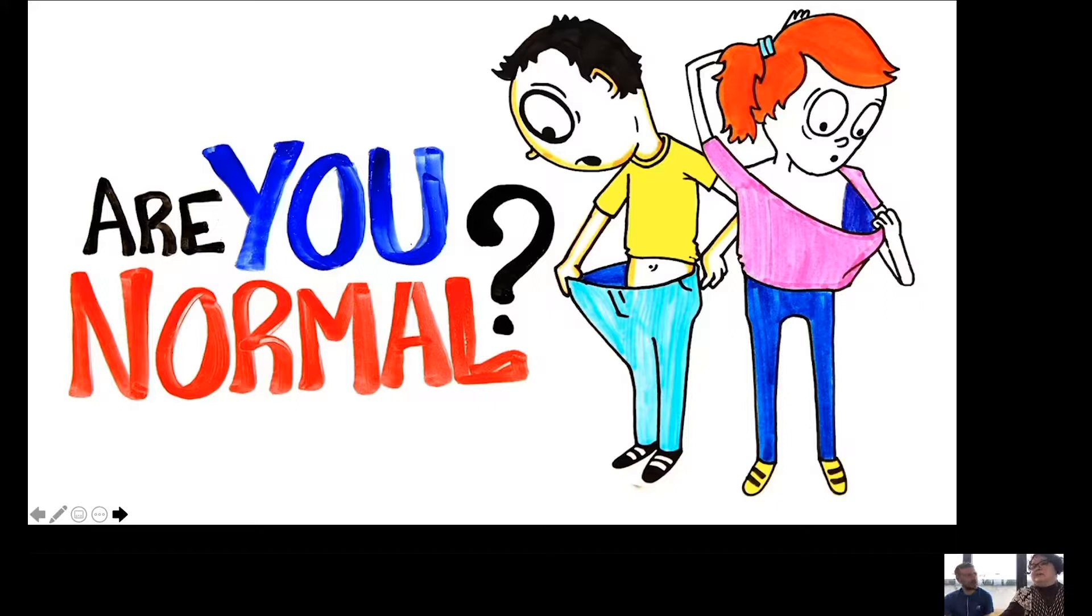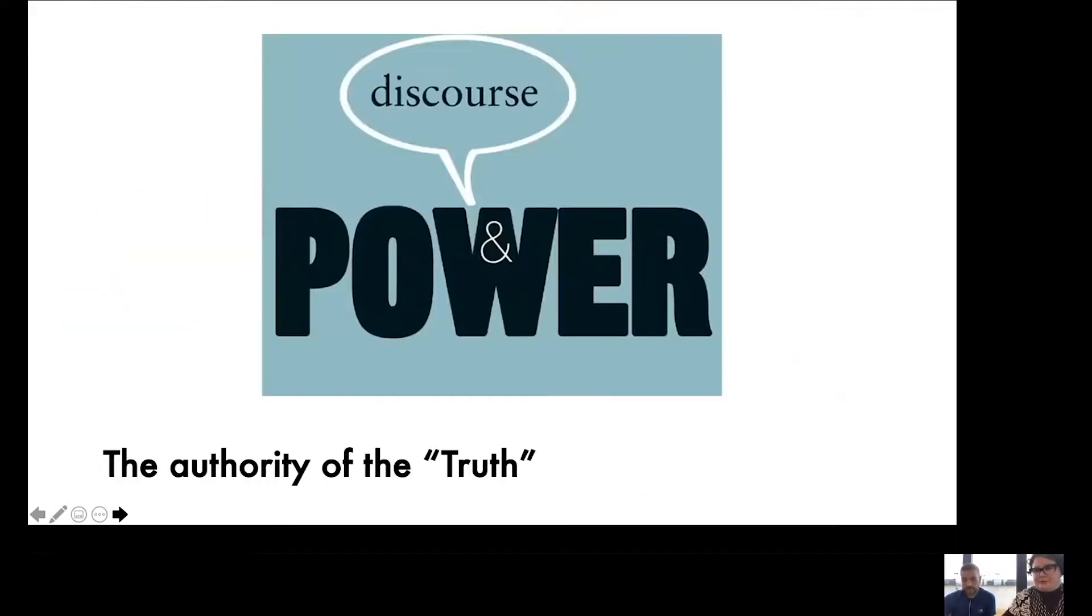So Foucault is really asking these questions. What is normal? What is normal? No, no, he doesn't ask what is normal. He asks what the normal hides. Yes, there you go. What's the power relationship that makes something to be normal and something not to be normal?